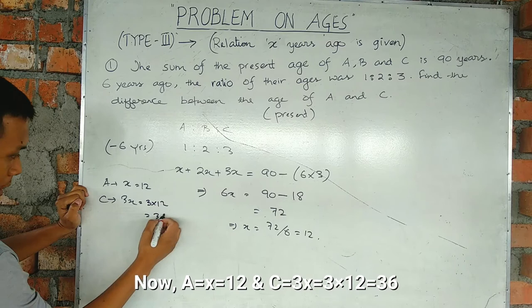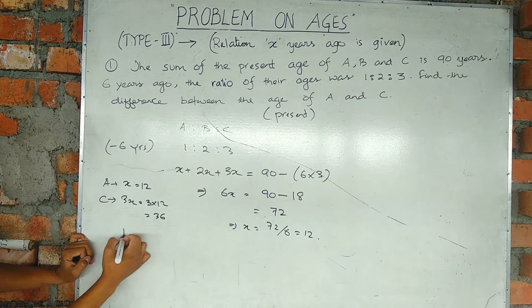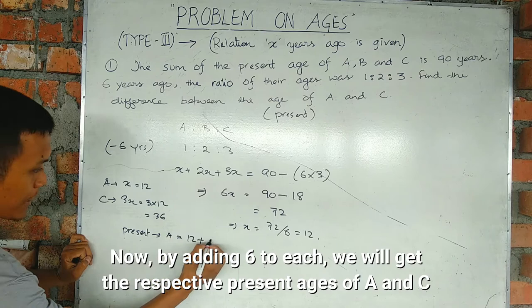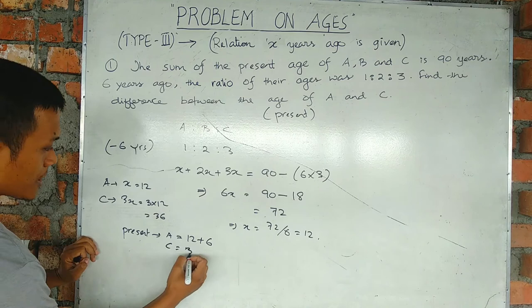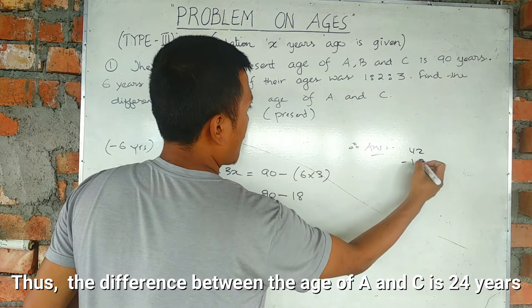Six years ago, A was 1x and C was 3x. The present age of A is 12 plus 6 equals 18, and C is 36 plus 6 equals 42. So the answer is 42 minus 18 equals 24.